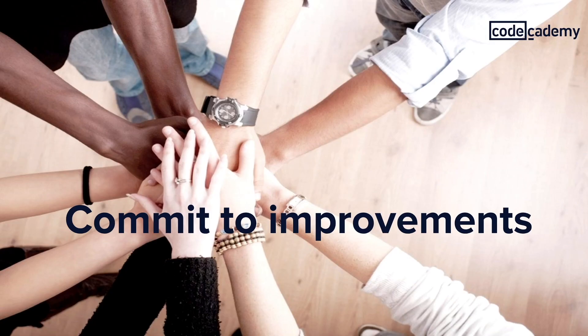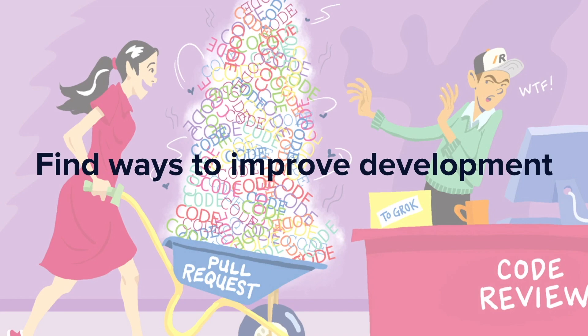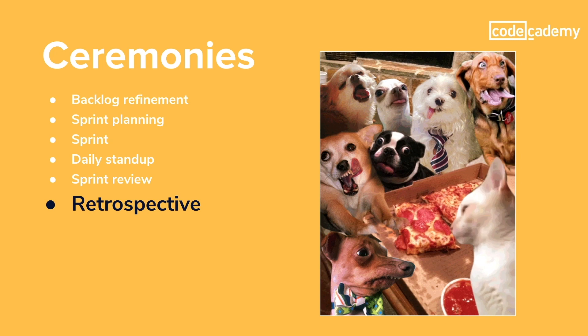The Scrum Master can help facilitate this meeting by helping the team compile a list of things the team agrees to improve and what the team will do in order to make these improvements a reality. These improvements can be anywhere from adding the task number to the pull request so that the reviewer can easily look up what the pull request is solving, to introducing Pizza Wednesdays to boost team morale.